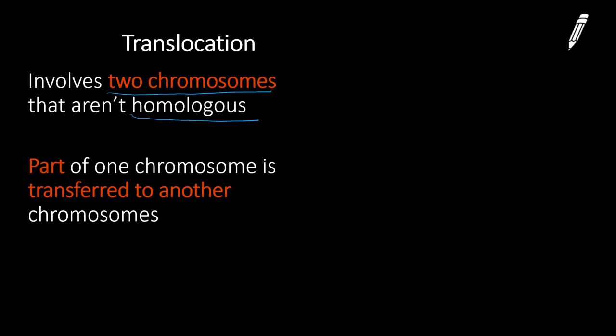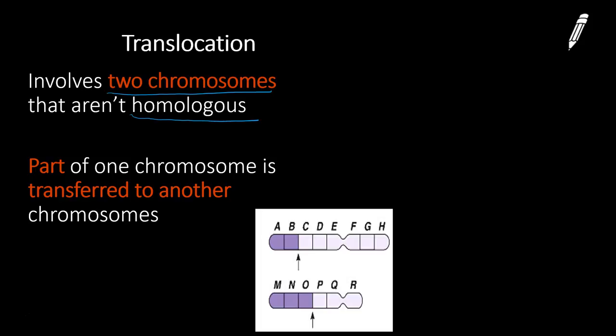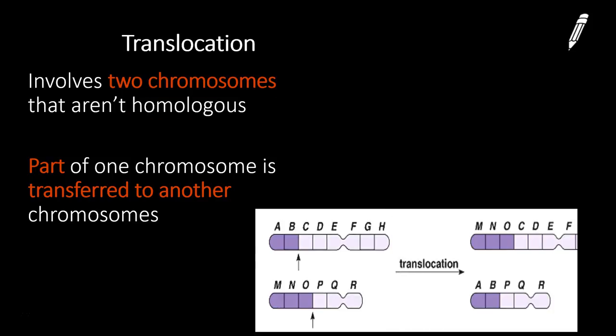Translocation involves two non-homologous chromosomes. And what happens, so if I take a look at these two chromosomes, one and two, they have different letters or different genes on them. What will end up happening is they could basically cross over amongst themselves, and then we could have different genes on different chromosomes that aren't supposed to be there. And that would be translocation. I kind of think of it almost as crossing over between non-homologous chromosomes.